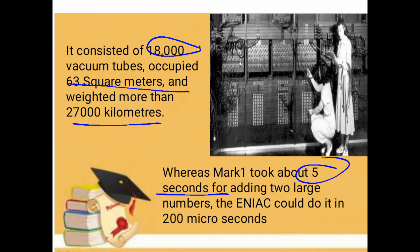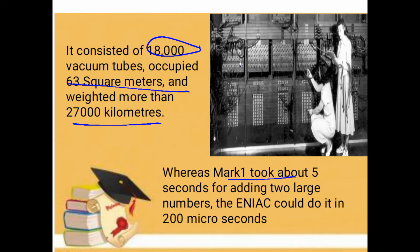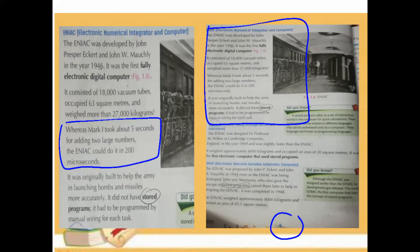Today's computers can open five or six applications, minimize and maximize windows, play games and pictures simultaneously. But the earlier computer Mark One took five seconds for one problem. In contrast, ENIAC could perform the same addition in 200 microseconds.